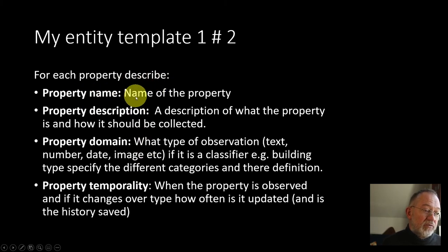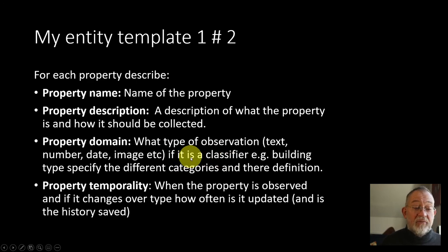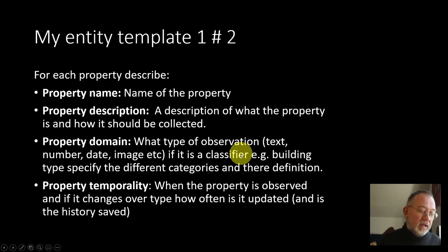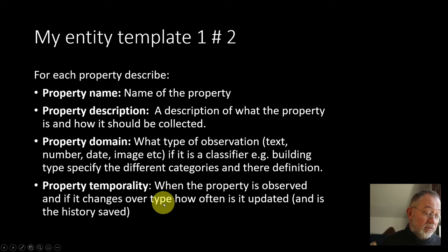For each property, we need to register the property name, a description of the property — what it is and how it is measured — its domain (what type of data it is: text, number, image), and if it's a classifier, we specify the values it can take. For example, building types might include church, public building, farmyard, mill, and so on. Similarly, for species of tree, which species types do we register?